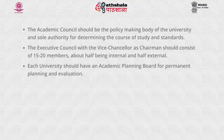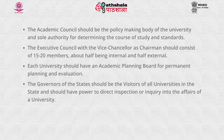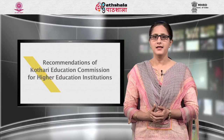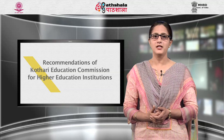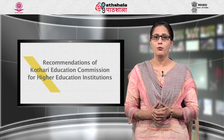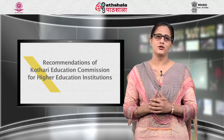Each university should have an academic planning board for permanent planning and evolution. The governor of the state should be the visitor of all universities and should have the power to direct inspection or inquiry into university affairs. There should be a council of affiliated colleges in every affiliated university to advise on all matters relating to affiliation. The Education Commission also made recommendations for bringing about elasticity in educational administration.